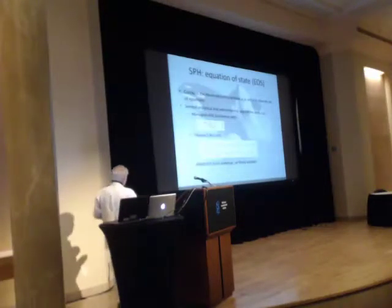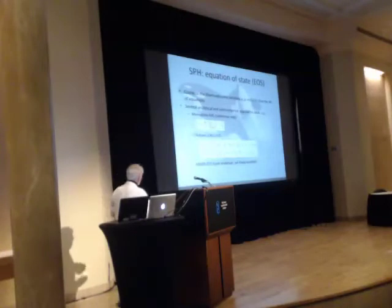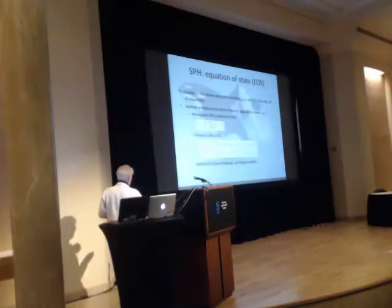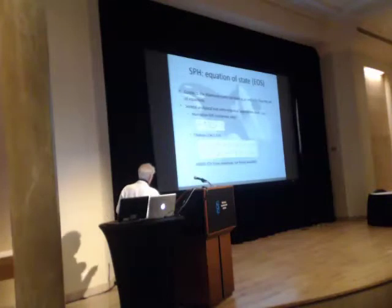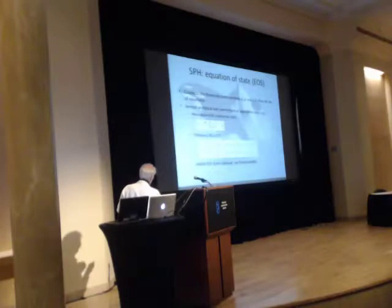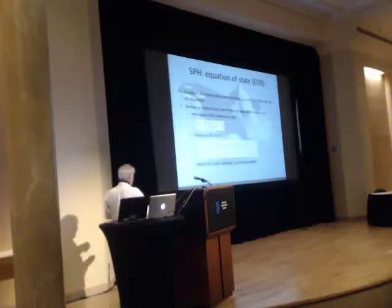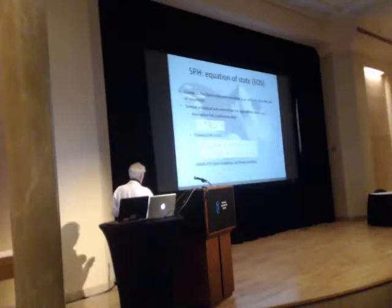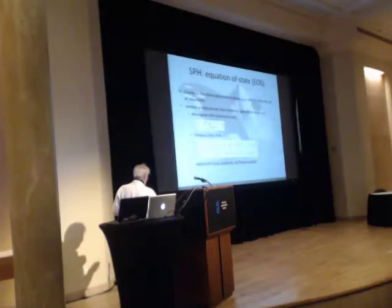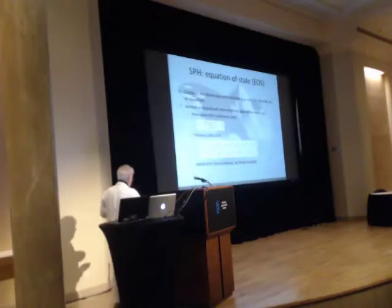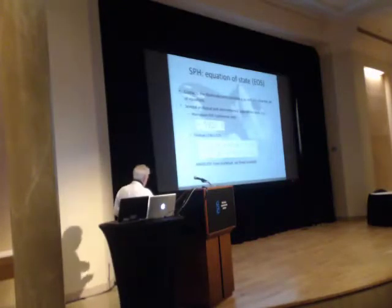Now the equation of state. Many people mentioned this equation of state — it's very important here. It connects the thermodynamic variables rho, p, and the velocity to close the set of equations. Several analytical and semi-empirical approaches exist. We have the Murnaghan, the Tillotson, and others not freely available. What we use is this equation of state for our numerical work to model the collisions.